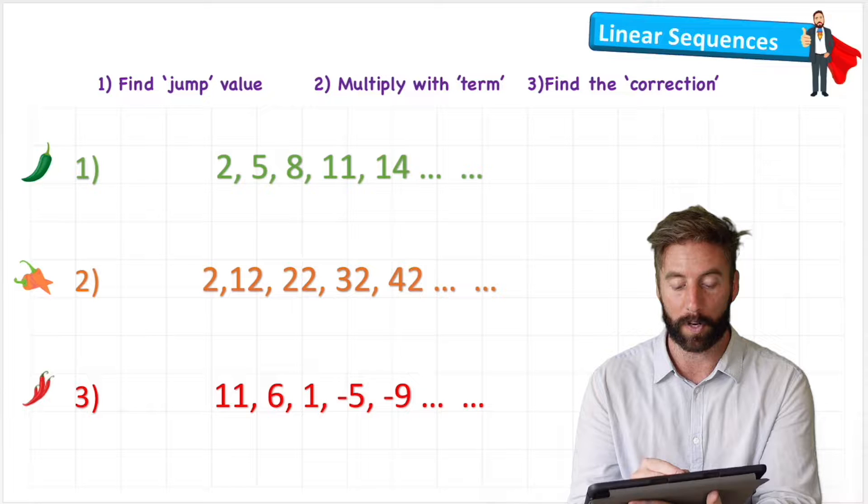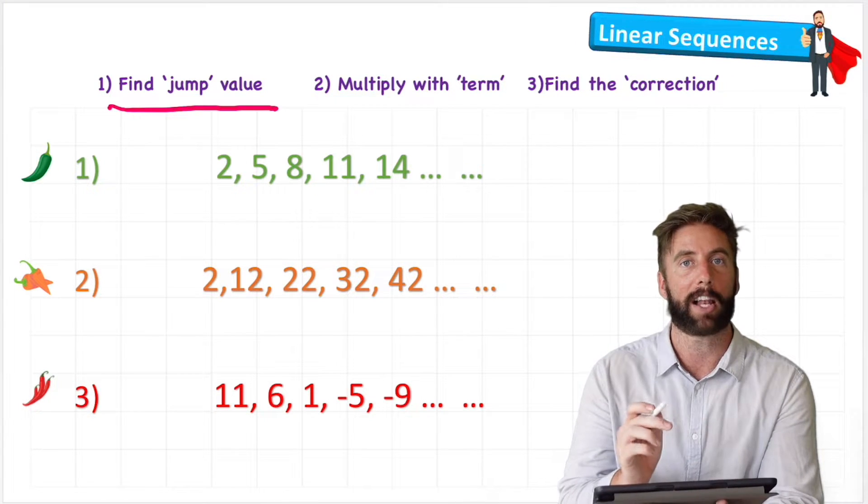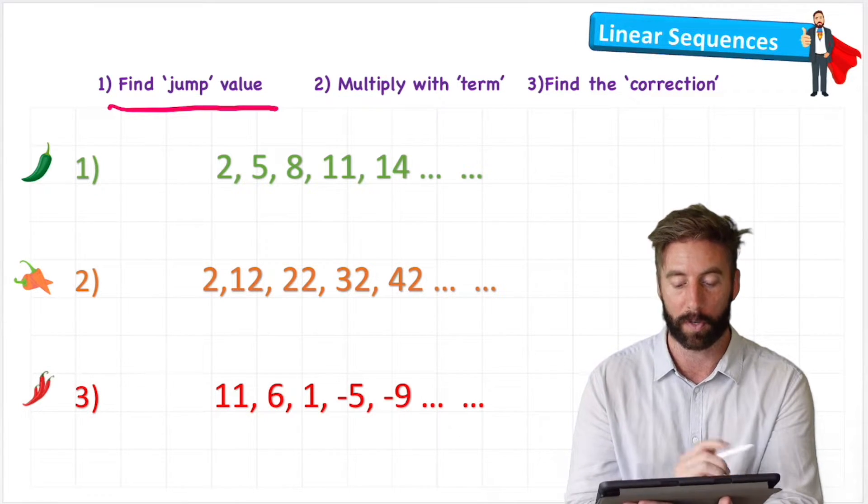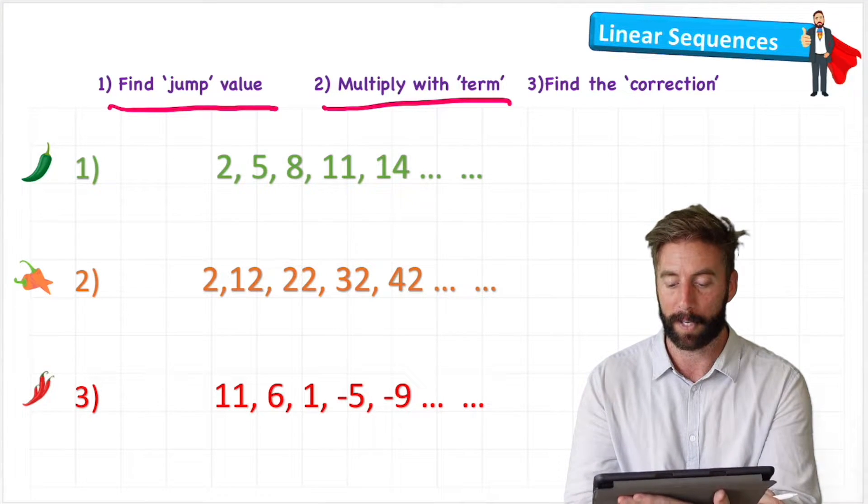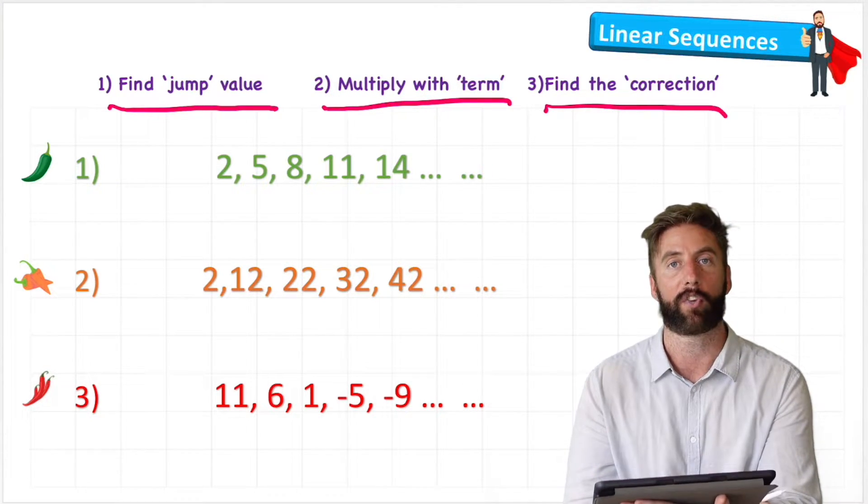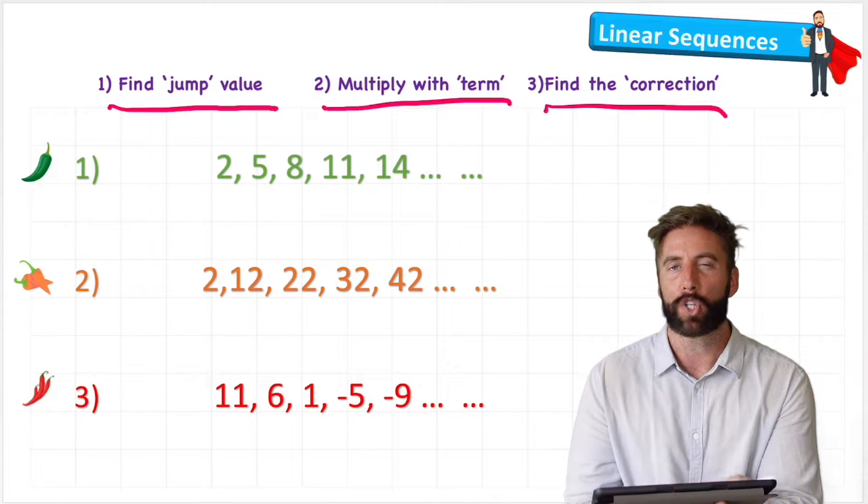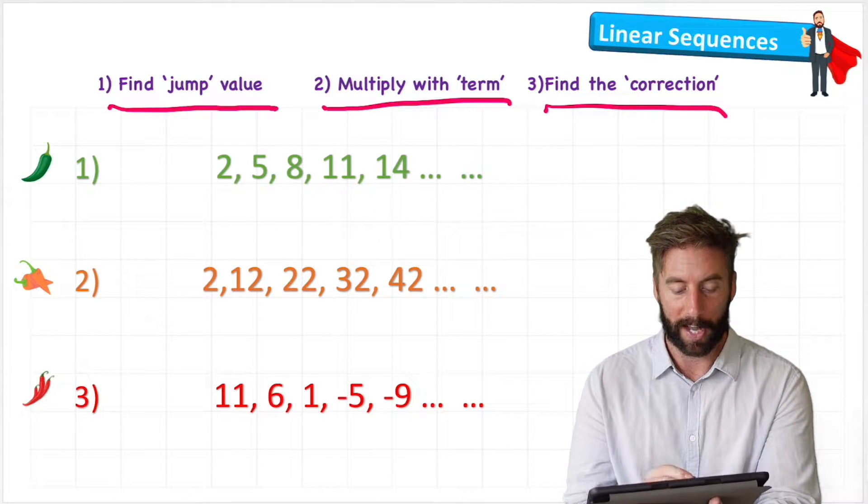So first we're going to find the jump value, the value of the difference between the numbers in our sequence. Then we're going to multiply it by the term and understand what that means. And then we're going to find the correction. That probably doesn't mean too much to you at the moment; that's what we're going to look at here today.